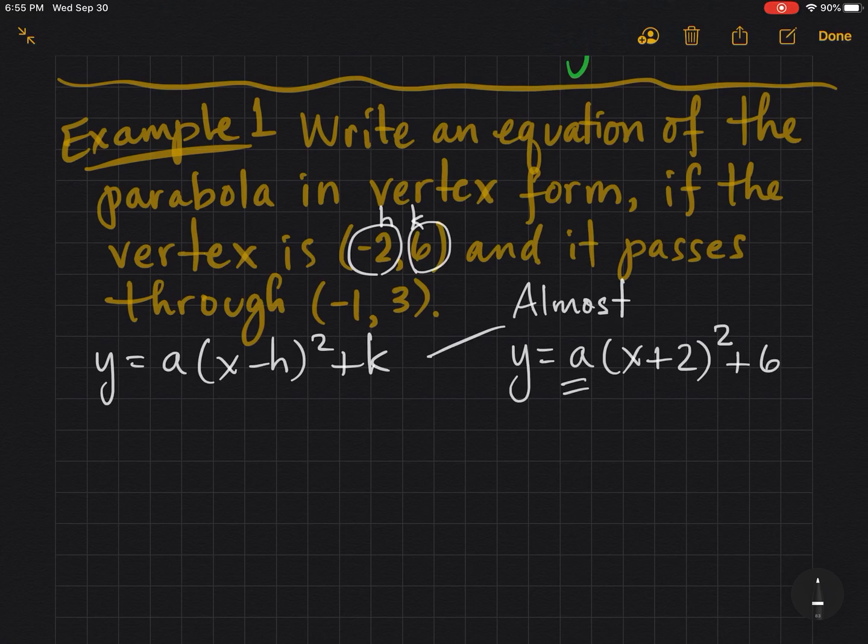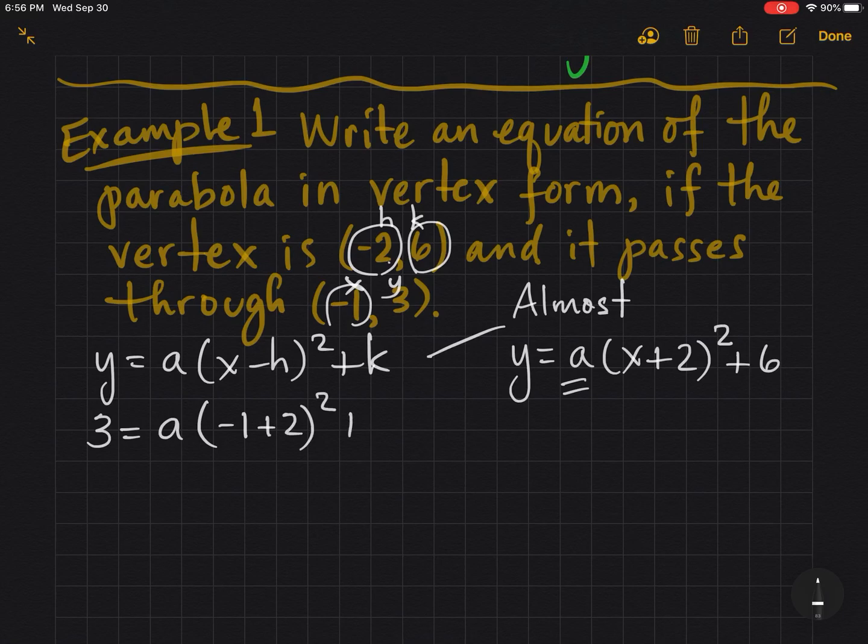What we're going to do is plug in everything we know and solve for a. So this is our x, this is our y. We plug 3 in for y, we don't know a, x is -1, h opposite of sign and k same sign.